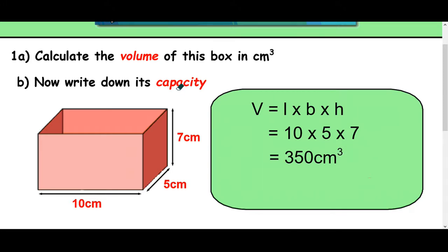Now, to get its capacity, I need to make sure to change that into milliliters. If you wanted to change it into liters, then decimal point at the end, back three places: 1, 2, 3. So it would be 0.35 liters.